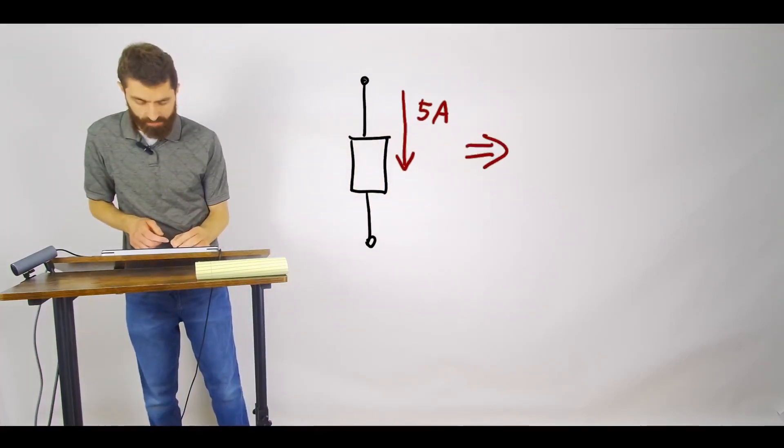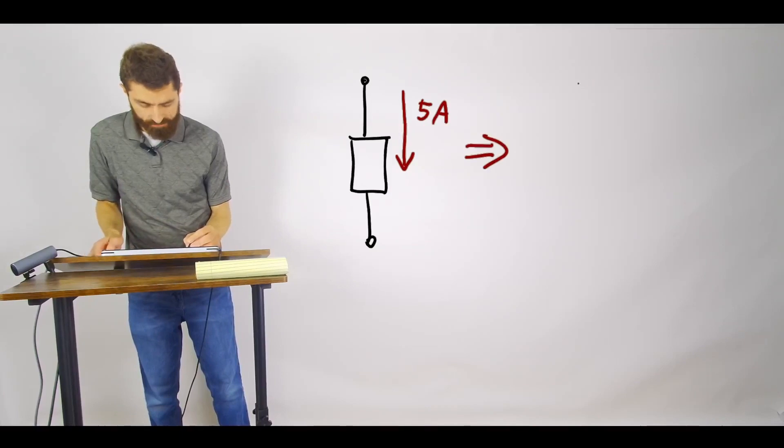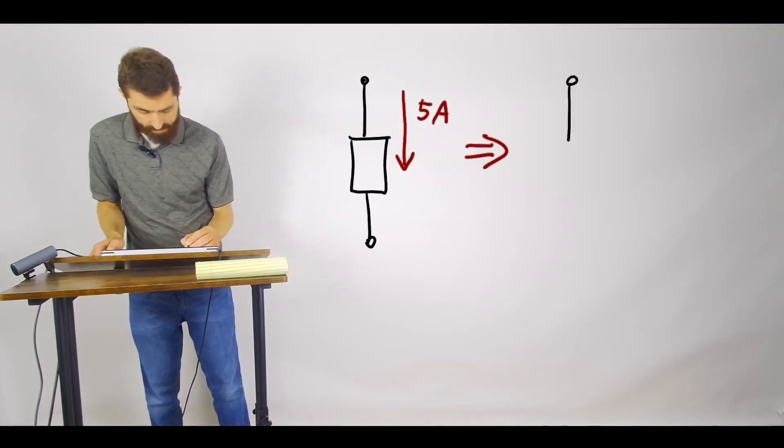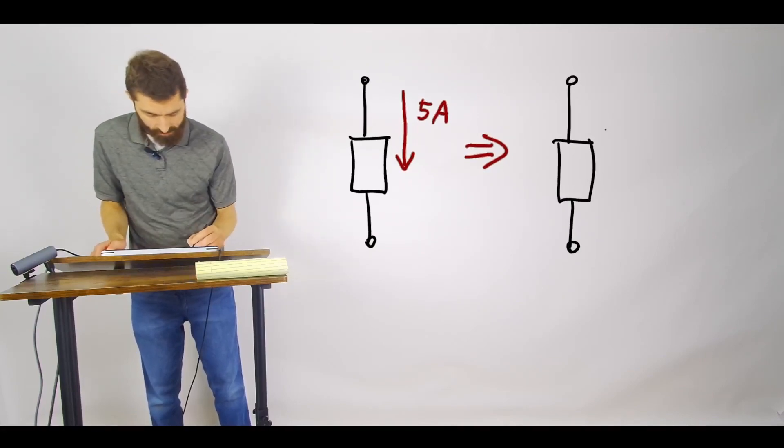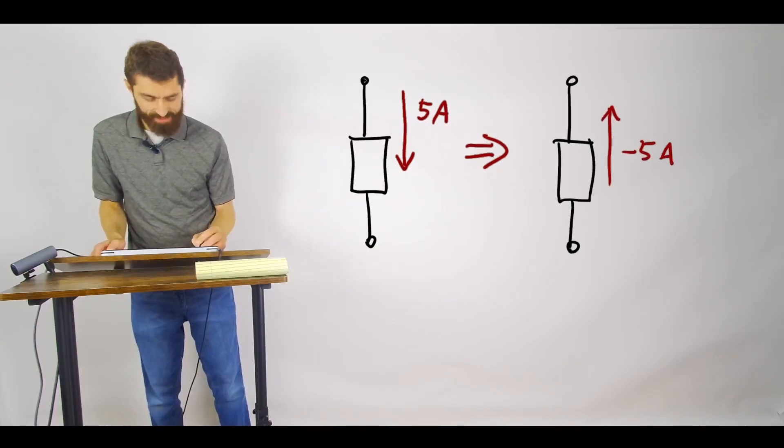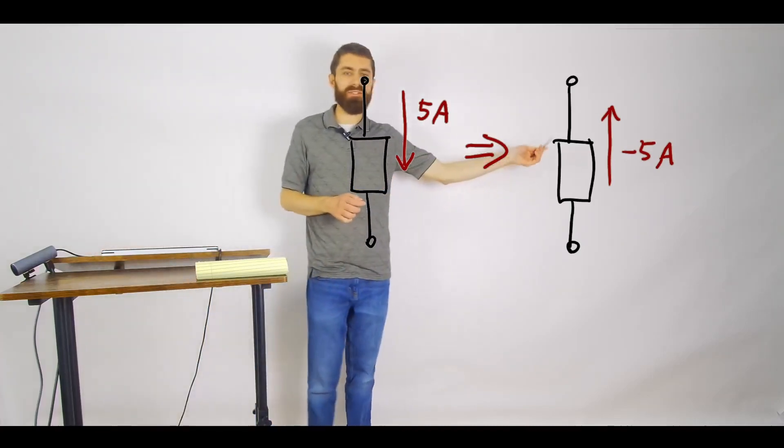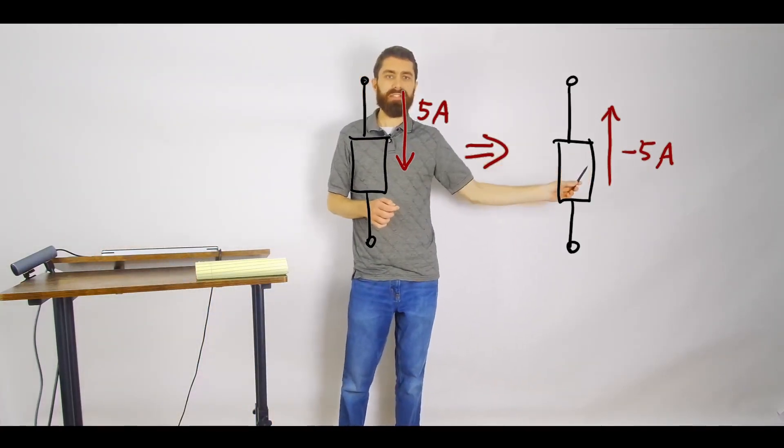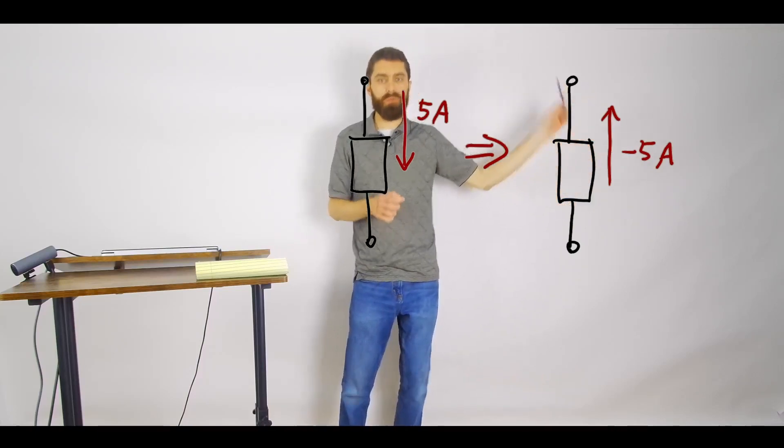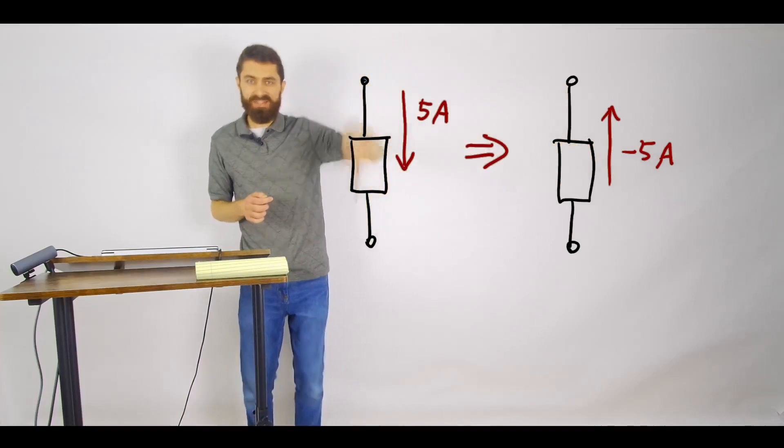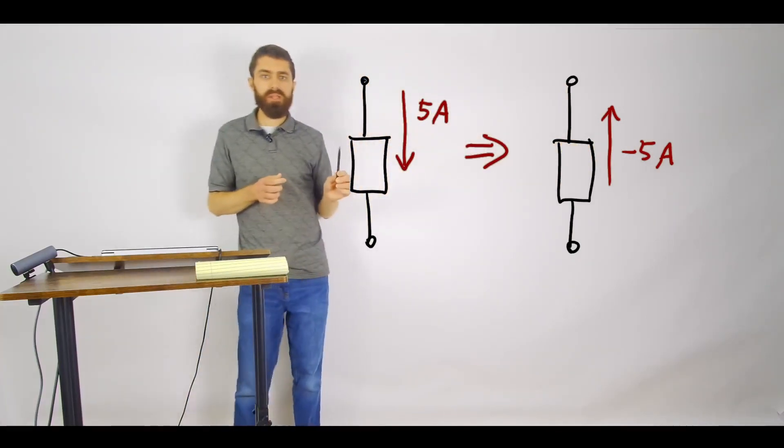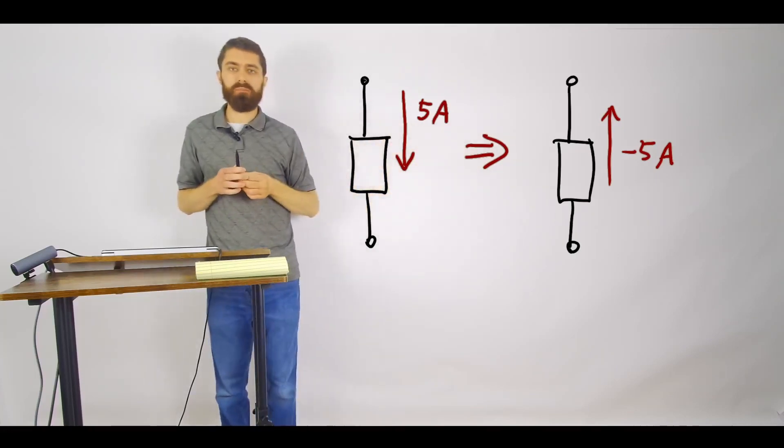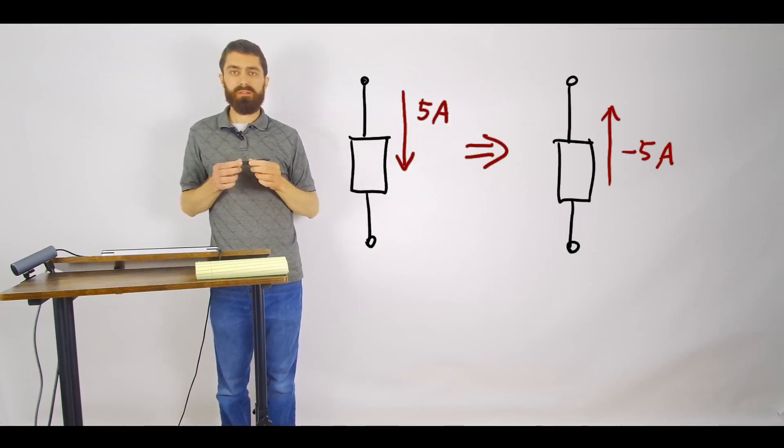That though is also an equivalent way of saying this. We could say that we have negative 5 amps going in the opposite direction. So if we say that the current in this direction is negative 5 amps, what we really mean is that it's positive 5 amps in this direction. So those are two different ways that you can specify the current.